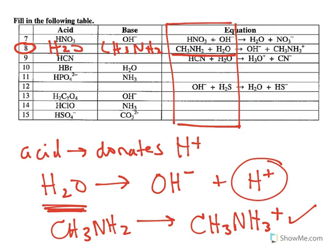We could look at another one. Let's write out the equation. Let's look at number 14. We have HClO plus NH3, and that's going to yield... I'll have to write on the other line here. Whenever those combine,